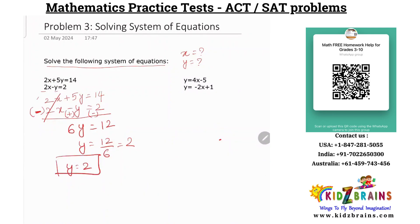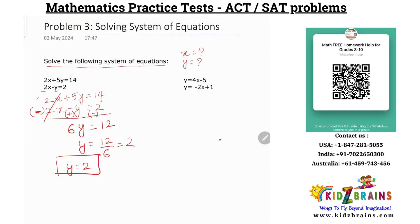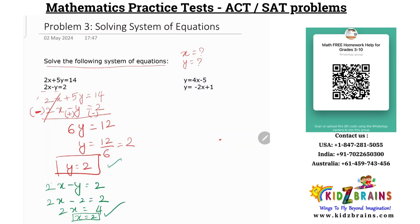After getting the value of y, we substitute this back into the original equation: 2x minus y is equal to 2. You can choose any of the equations. Substituting y equals 2: 2x minus 2 is equal to 2. So 2x is equal to 2 plus 2, which is 4. Therefore x is 4 divided by 2, so x is 2. This is how we have found out the values of y and x and solved this equation.